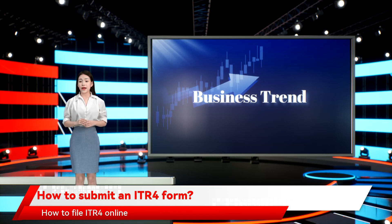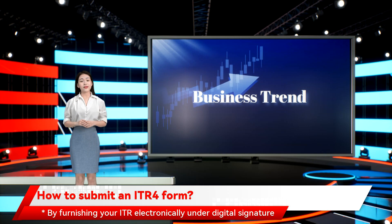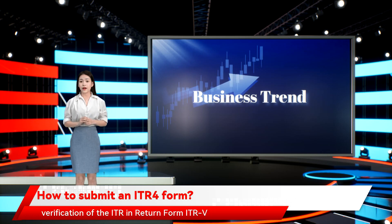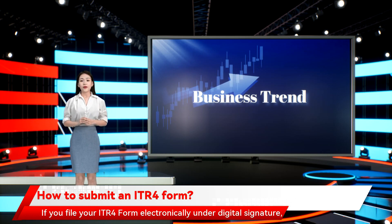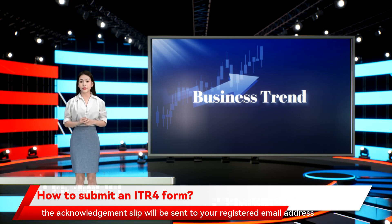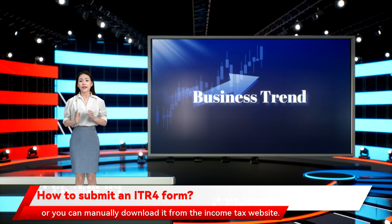How to file ITR-4 online: by furnishing your ITR electronically under digital signature, or by transmitting the data electronically and then submitting the verification of the ITR in return form ITR-V. If you file your ITR-4 form electronically under digital signature, the acknowledgement slip will be sent to your registered email address, or you can manually download it from the Income Tax website.